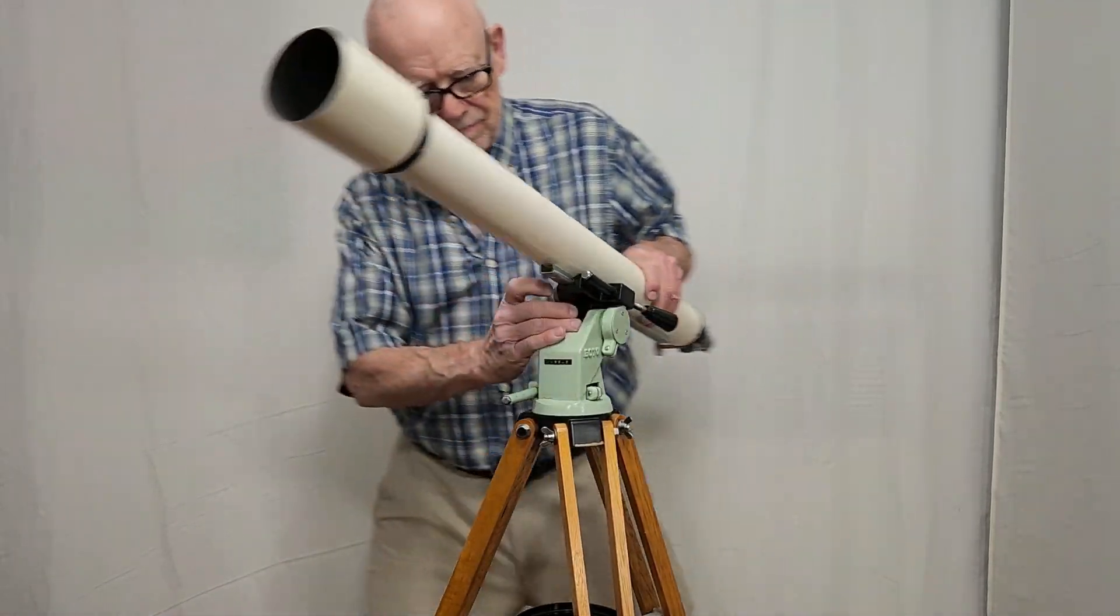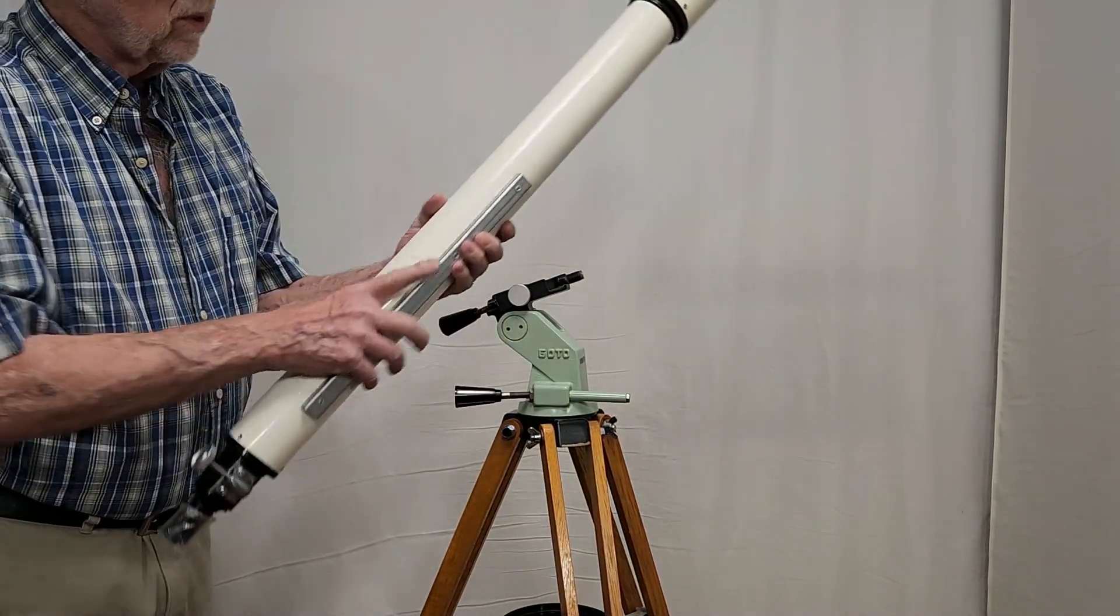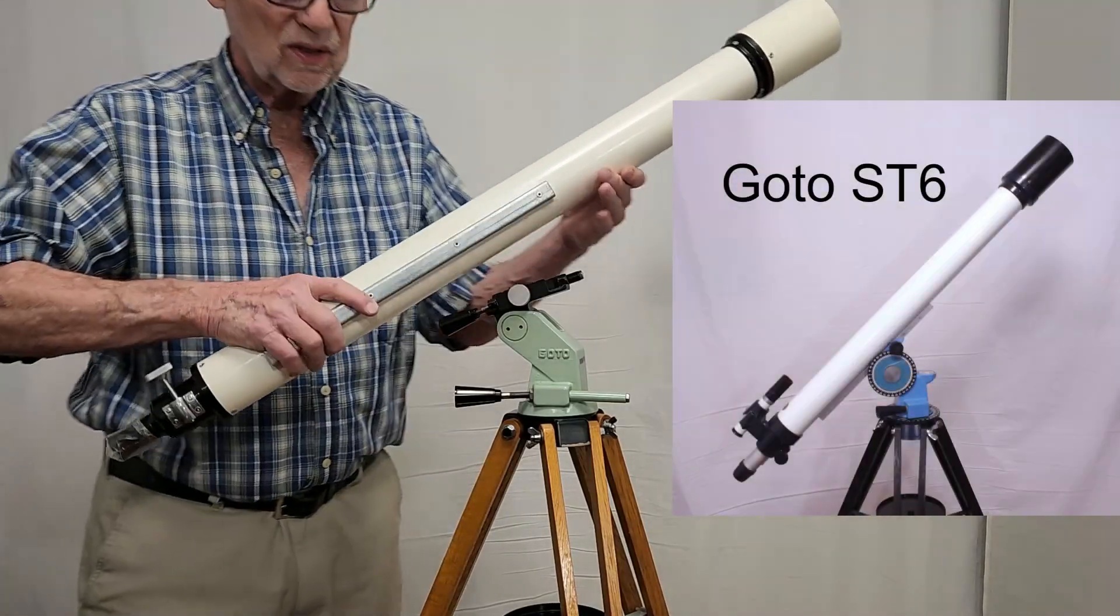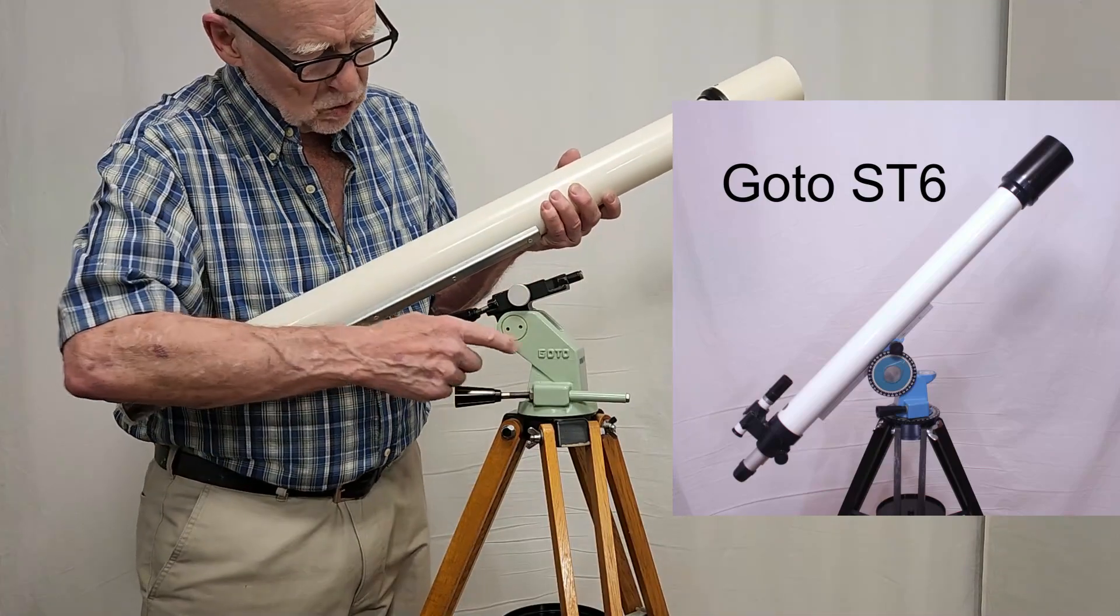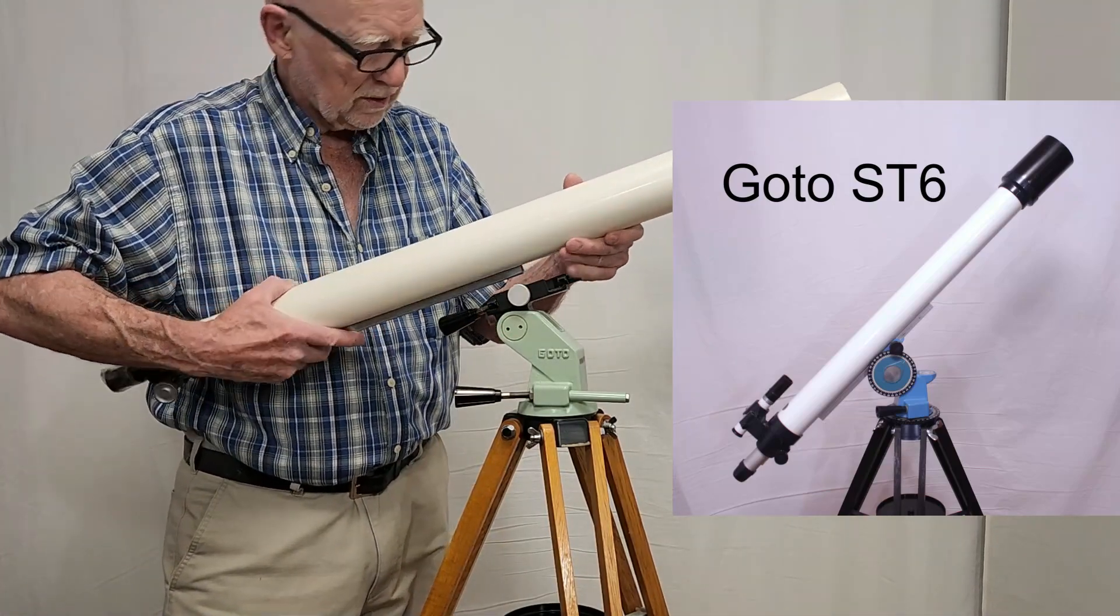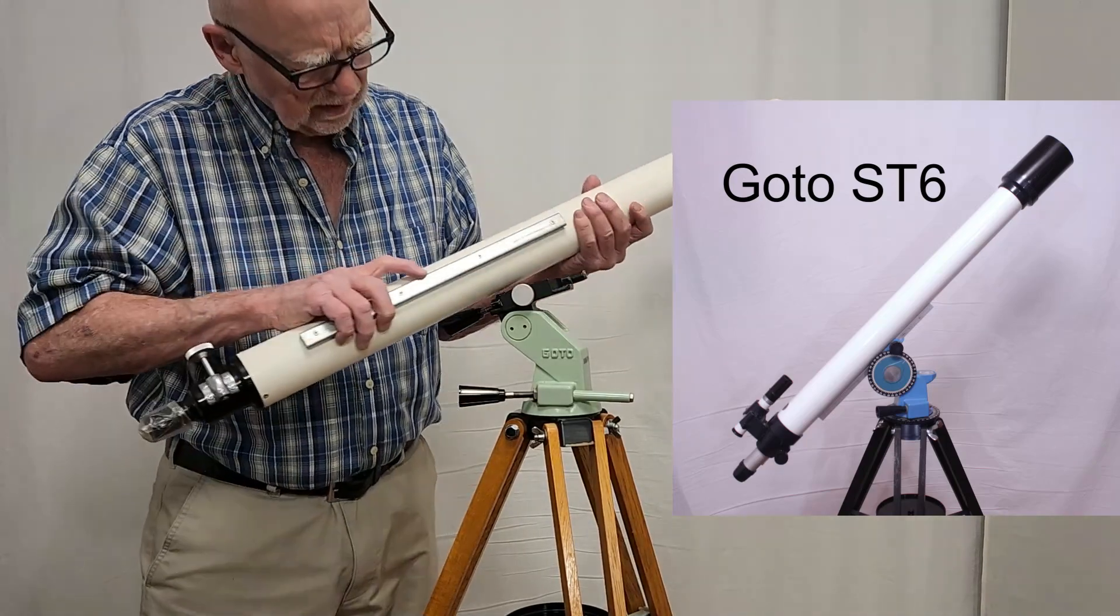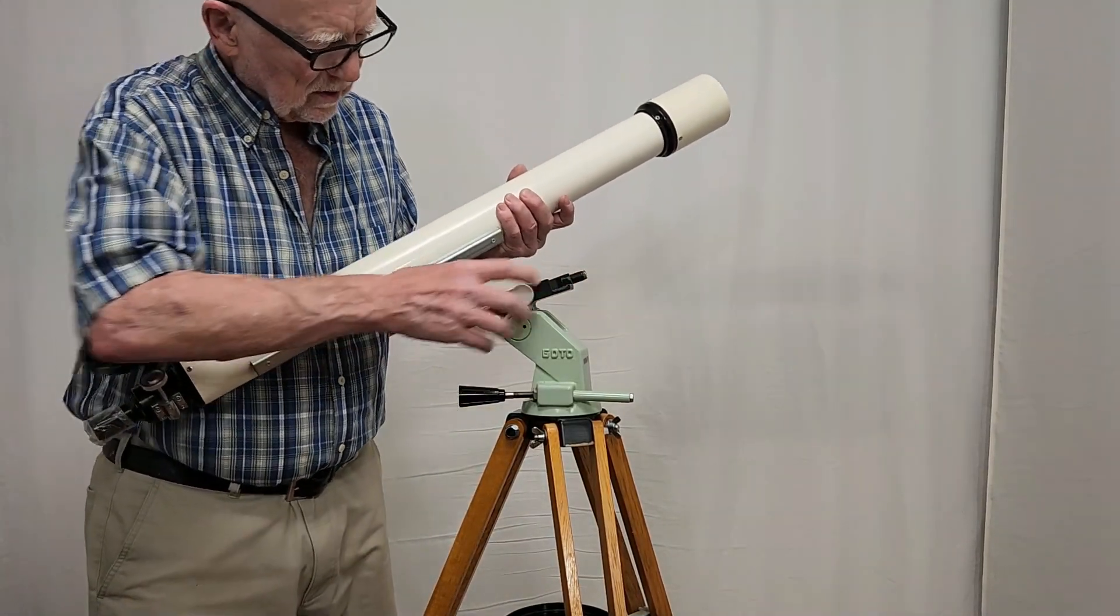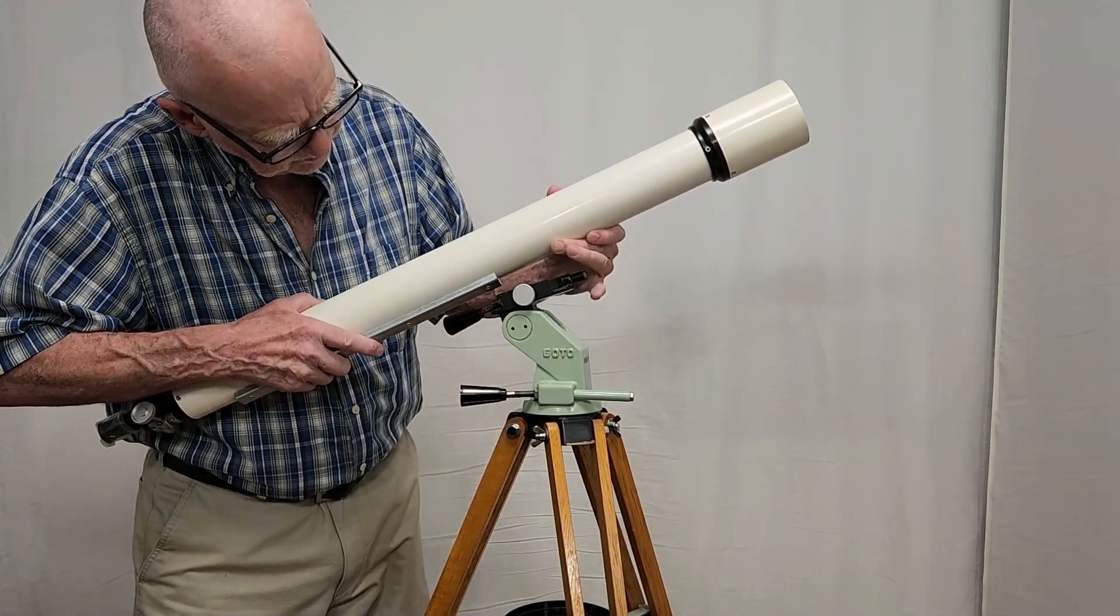This scope has a friction clamp back here. This is really very similar to the Gotoh ST6. If you haven't seen my video on that, you may want to check that out. Except this one is made of much heavier material. This is all either steel or aluminum. I believe this is steel here. That's cast aluminum. That's probably cast aluminum. I'm not sure.